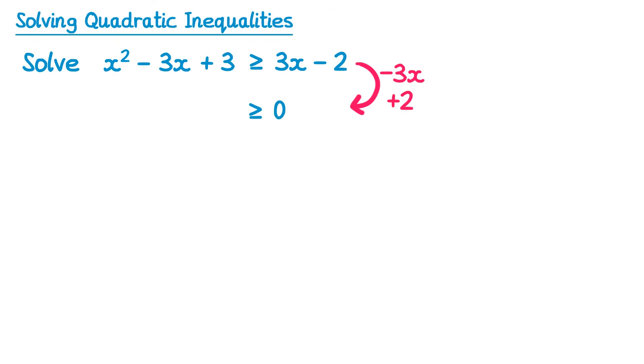On the right hand side this gives 0, since 3x take away 3x is 0, and negative 2 add 2 is 0. On the left hand side, the x squared will remain unchanged, but then negative 3x take away another 3x gives negative 6x, and 3 add 2 gives 5. This inequality is now in the correct form. We can then look at solving the equation.